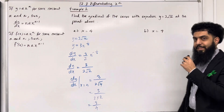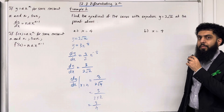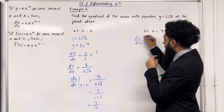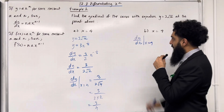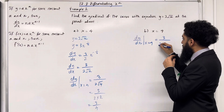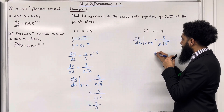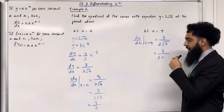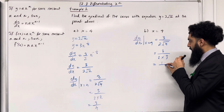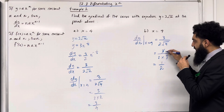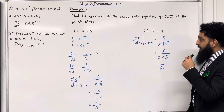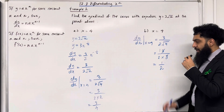For part B, we want the gradient at x equals 9. Substituting into dy over dx equals 3 over (2√x): we get 3 over 2 times √9 equals 3 over 2 times 3 equals 3 over 6, which simplifies to a half. So the gradient of the curve at x equals 9 is a half.